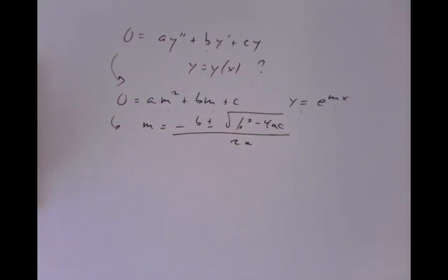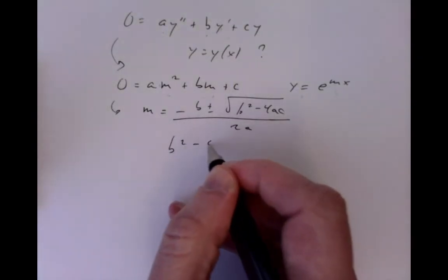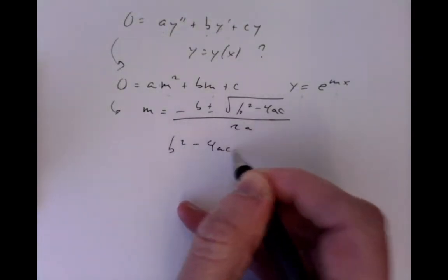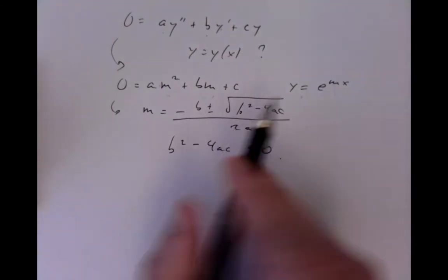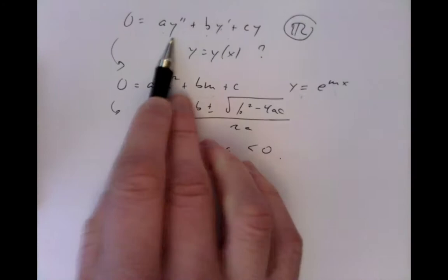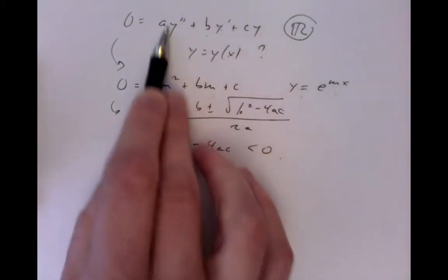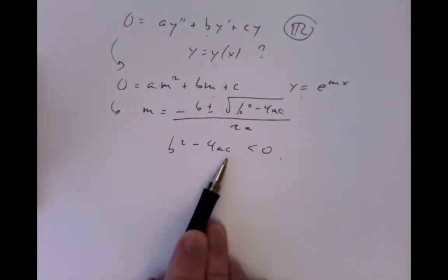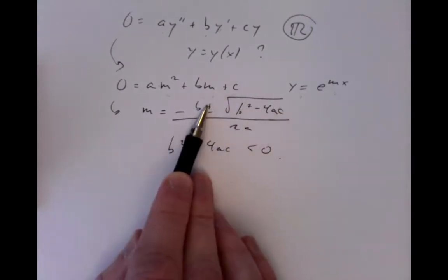What if there are complex roots? In other words, what if B squared minus 4AC is not a positive number but negative? Let's assume that we're dealing only with real numbers in the problem — the original problem, everybody's a real number. We only care about real solutions of this real problem, but in the middle of our calculation we've come up with complex numbers for these exponents. So how can we get rid of them?